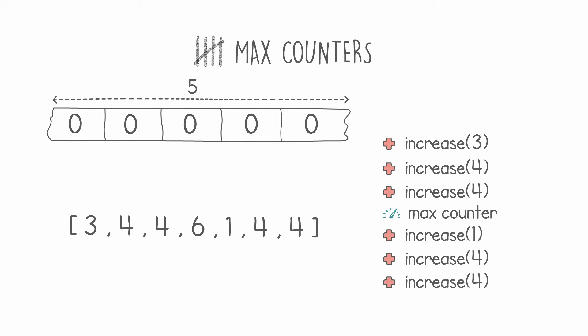We receive an array where each element is a number representing our counter index. For example, our second element in the array, number 4, tells us to increment the fourth counter. In the same way, our fifth position in the array says increase counter number 1, increase the first counter.